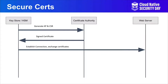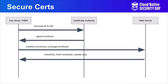You're going to go interact with an application like the API server. You establish a connection and exchange certificates. At this point, the web server is going to tell you here are all the issuers that it's going to trust — give me a cert from one of these issuers. You present the cert. The web server is going to check a couple of things, including whether or not it's on a certificate revocation list.